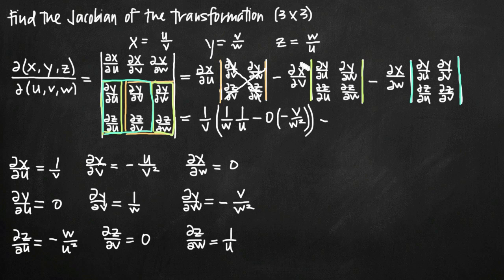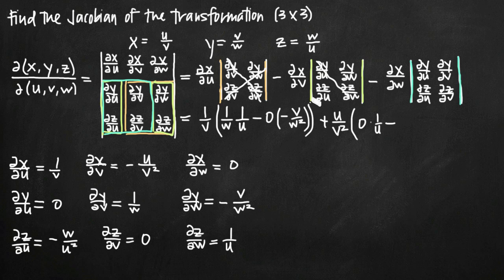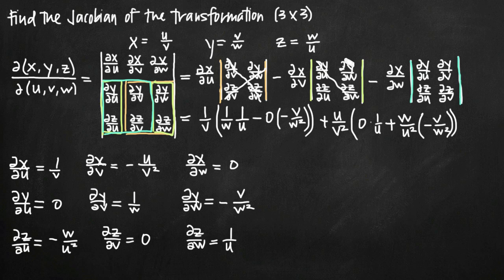We subtract the partial derivative of x with respect to v, which is negative u over v squared — canceling the negative to get positive u over v squared. That multiplies (0 times 1 over u) minus (negative w over u squared times negative v over w squared). According to our formula, we then subtract the partial derivative of x with respect to w, which is 0, so that entire third term goes away since anything multiplied by 0 cancels.